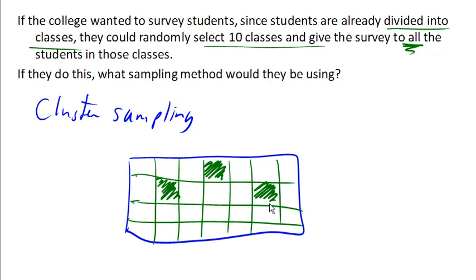This is commonly done for things like some polling where people go door-to-door, because it doesn't make sense to go to one house in one city and another house in another city or another neighborhood. So they'll choose a neighborhood and visit everyone inside of a neighborhood.